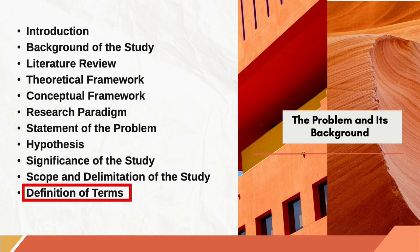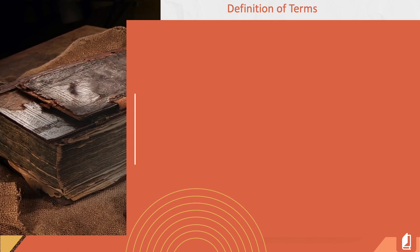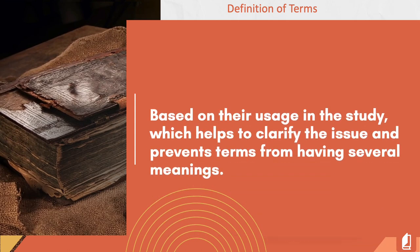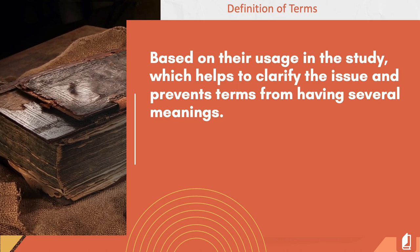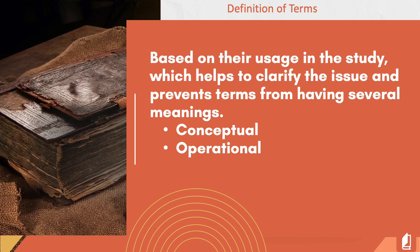Definition of Terms includes terms that have been defined based on their usage in the study, which helps to clarify the issue and prevent terms from having several meanings that could lead to ambiguity. Some educational institutions define conceptual and operational terms separately. Conceptual definitions are the terms as defined by authors or experts in the field, while operational definitions refer to the way the term is used or referred to in the study. Some colleges or universities are not particular about separating these, as long as it helps clarify the meaning of important terminologies used in the research. Here is an example of definition of terms.